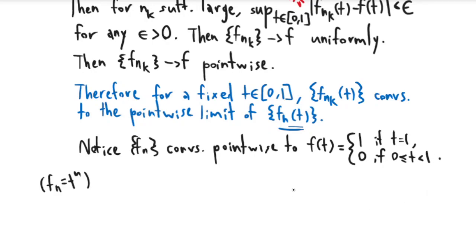This is the pointwise limit because if t = 1, as n gets bigger this is just constantly equal to 1. And if t < 1, then the numbers keep getting smaller and they converge to 0.